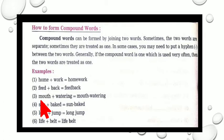Now, how to form compound words? Compound words can be formed by joining two words. Sometimes the two words are separate. Sometimes they are treated as one. In some cases, you may need to put a hyphen between the two words. Generally, if the compound word is one which is used very often, then two words are treated as one. So here, what do we understand from it? That the two words are joined together but sometimes, even the hyphen is used to connect it to make a compound word.